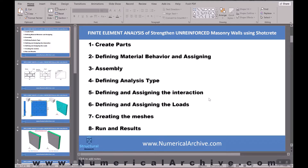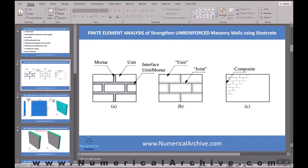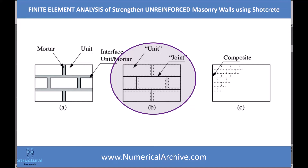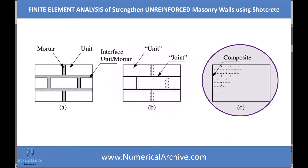Before we start modeling in ABAQUS software, I would like to briefly recall the common methods of numerical modeling of masonry walls. Researchers usually model masonry walls in three ways: figure A represents micro modeling, figure B represents simplified micro modeling, and figure C represents macro modeling.